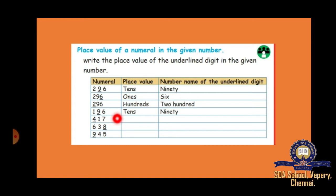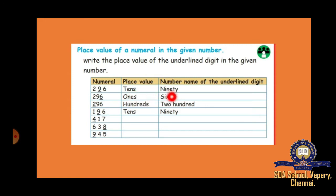Next, you have to identify the place value. For example, in 296, the underlined number is 9. In which place is 9? The first place is hundreds, then tens, then ones. So 9 is in the tens place, which equals 90.